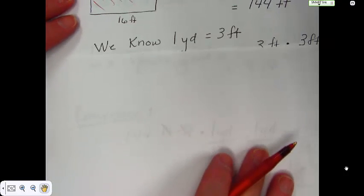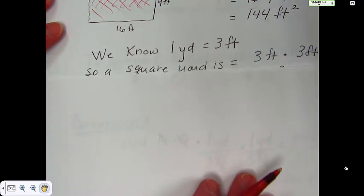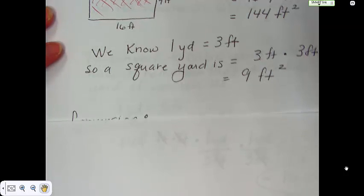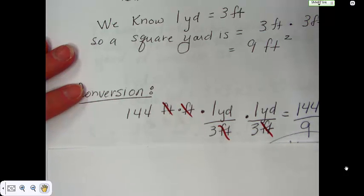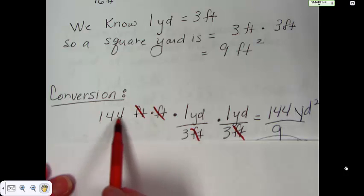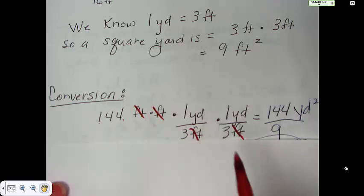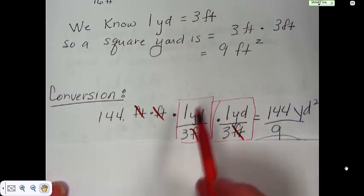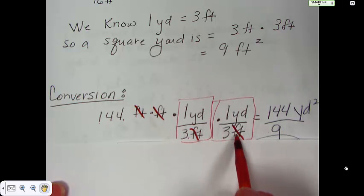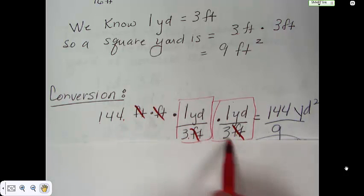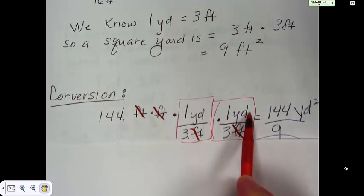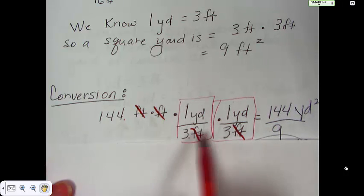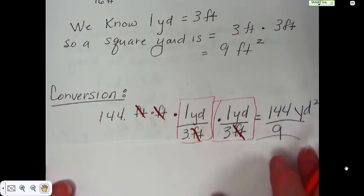We have 144 square feet. We know that 1 yard is 3 feet. We also know that a square yard is 3 feet by 3 feet, which of course is 9 feet squared. So I put feet times feet instead of feet squared to help me remember when making these conversions that feet has to be in there twice. I have 1 yard over 3 feet, then 1 yard over 3 feet again. Feet on the top, feet on the bottom — crossed out the feet, left with yards times yards, which gives us yards squared. We end up with 144 yards squared over 9 times 9, and the feet are gone.